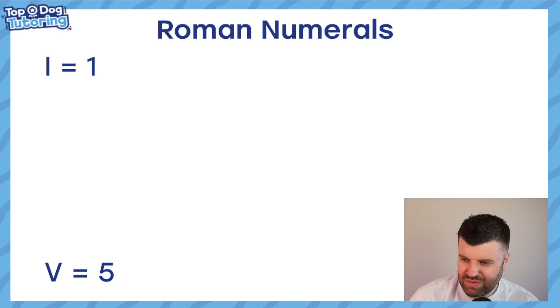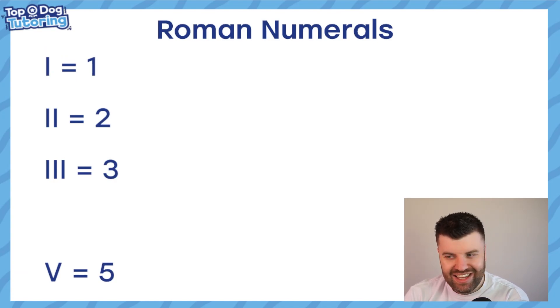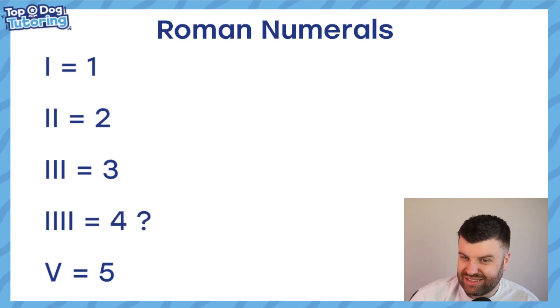Roman numerals don't work like we'd expect numbers to work. We have I for 1, and then the next time we get a new symbol is V, and that when it comes to being 5. So you might be thinking, what? We've just skipped 2, 3, and 4. Well that's right, because we're going to look at the rules now. So how do we show 2? If I is 1 and V is 5, what's 2? Well, II, that's going to be 2, right? So 3, pretty obvious, III.